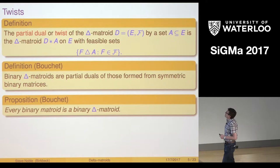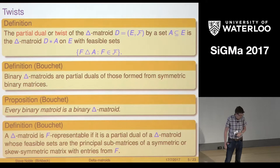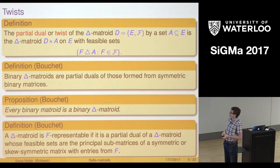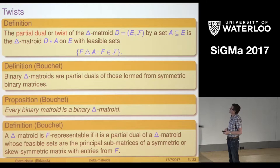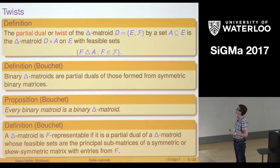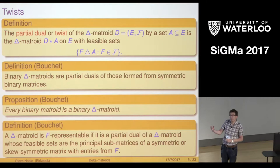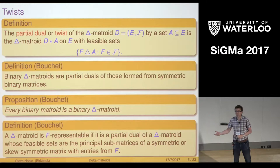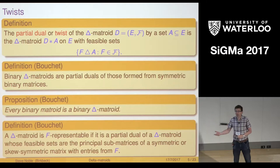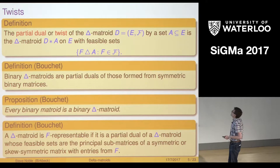Not too difficult to see every binary Matroid is a binary Delta Matroid. Now we can define representability or representable Delta Matroids over arbitrary fields. There are different definitions of this in the literature but I'm going to stick with this one. I'm going to say it's f representable if it's a partial dual of something we formed on the previous slide only my matrix can have entries from this field f and it's got to be either symmetric or skew symmetric.